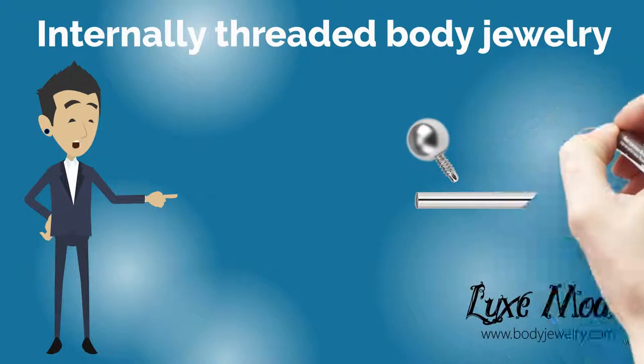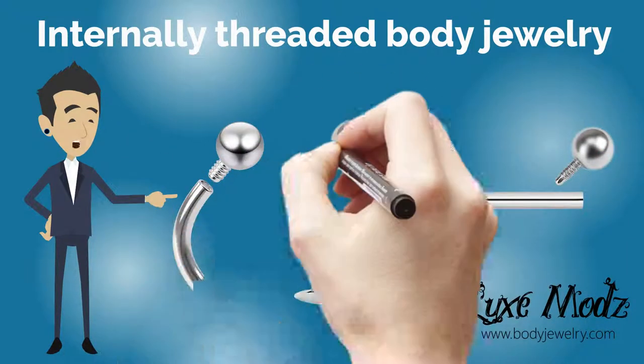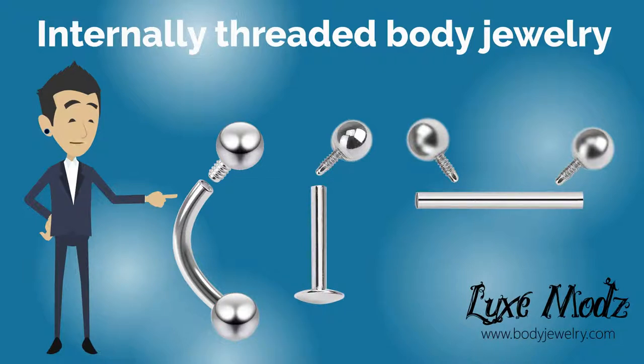In internally threaded body jewelry, it's the opposite. The threading is located on the ball end, which in turn can be screwed onto the shaft itself.